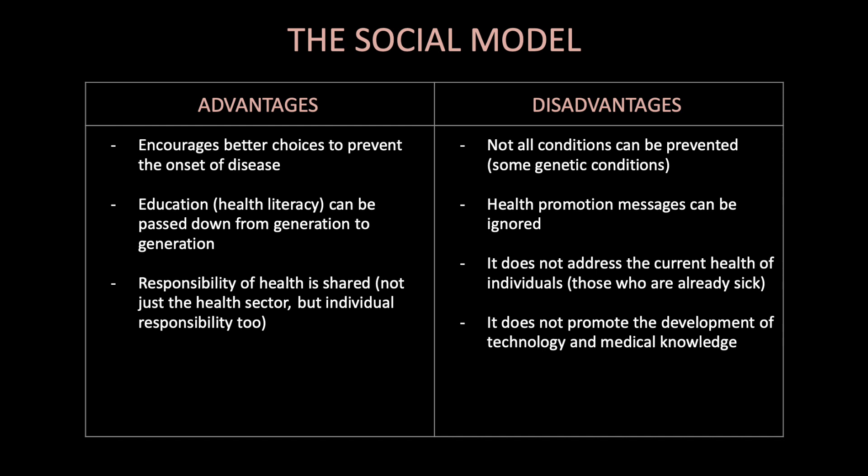The social model of health does have some advantages and disadvantages. Advantages include the encouragement of better choices to prevent the onset of disease, and health literacy can be passed down from generation to generation through education. The responsibility of health is shared — it's not just the health sector; individuals are held accountable for their own health too. Disadvantages include that not all conditions can be prevented, such as some genetic conditions. Health promotion messages can be ignored. The social model does not address the current health of individuals who are already unwell, and it does not promote the development of technology and medical knowledge.